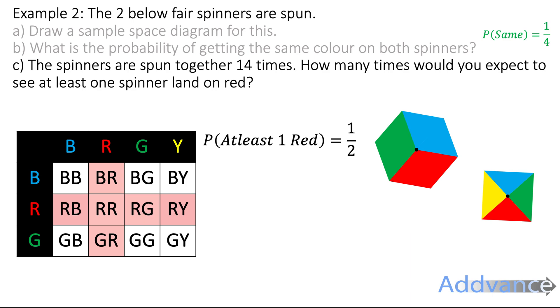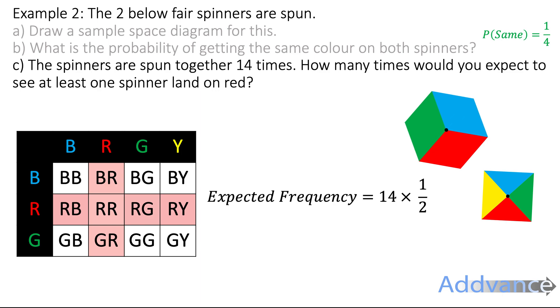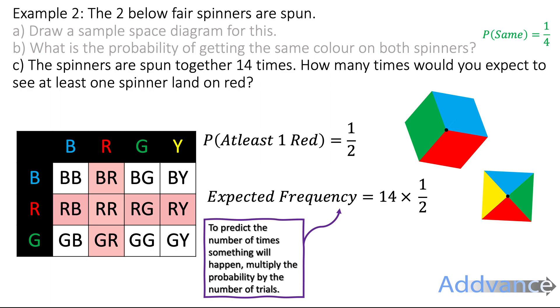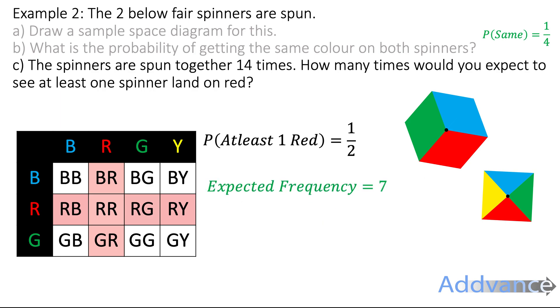And there are 6 out of 12 options. 6 out of 12 is the same as 1 half. So, the probability of getting at least 1 red is 1 half. But it says we're going to do it 14 times. So, all we'll do is do 14 times a half and that is 7. To predict the number of times something will happen, multiply the probability by the number of trials. 14 times a half is 7 and you will expect it to happen 7 times. And that is the final answer.